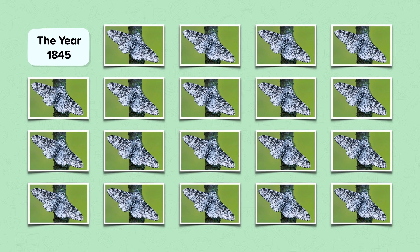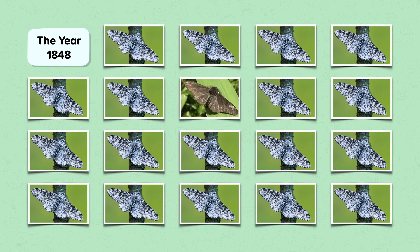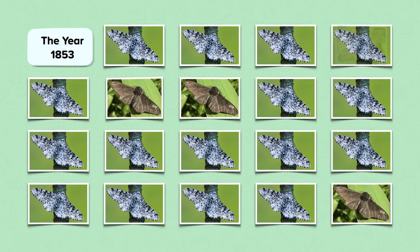The first all-black peppered moth in Manchester was recorded in 1848. This is also an inherited characteristic. So the moths can inherit white with black speckles from their parents, or all-black colouring from their parents. As time passed, more and more black moths were being born each generation, and fewer and fewer white ones with black spots. As older moths died and the younger ones replaced them, the population as a whole had a higher percentage of black moths.